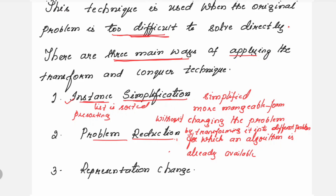The first one is instance simplification. Whenever the problem is too difficult to solve directly, you can convert it into a more simplified, more manageable form — but you have to take care that you are not changing the problem. For example, you can take pre-sorting, because most of the time problems are easily solved when the list is sorted, whether it is searching, finding the median for the selection problem, checking if all elements are distinct (the element uniqueness problem), or topological sorting.